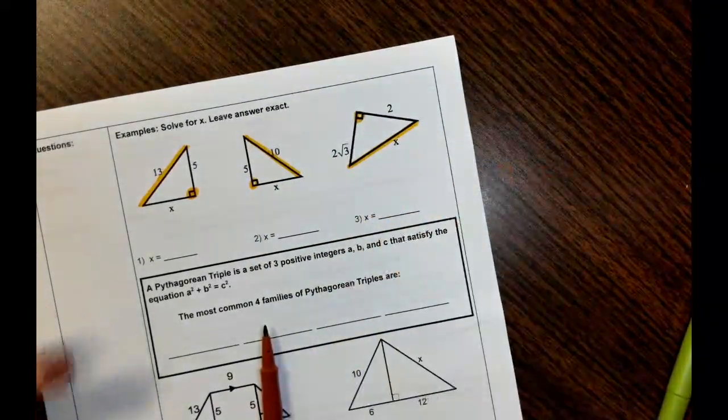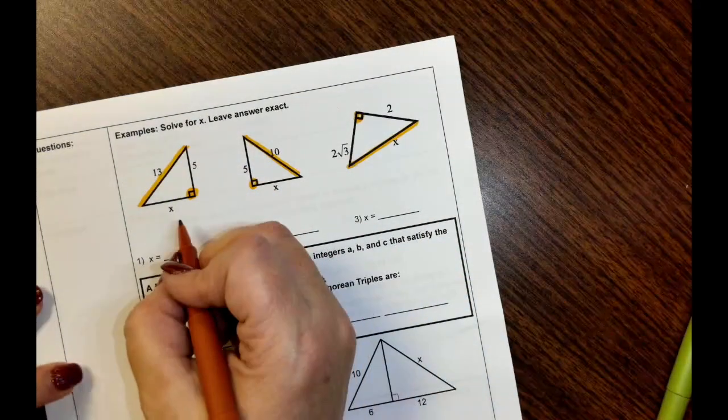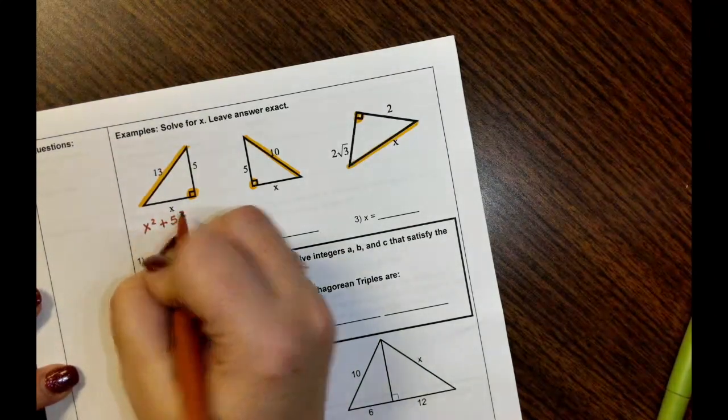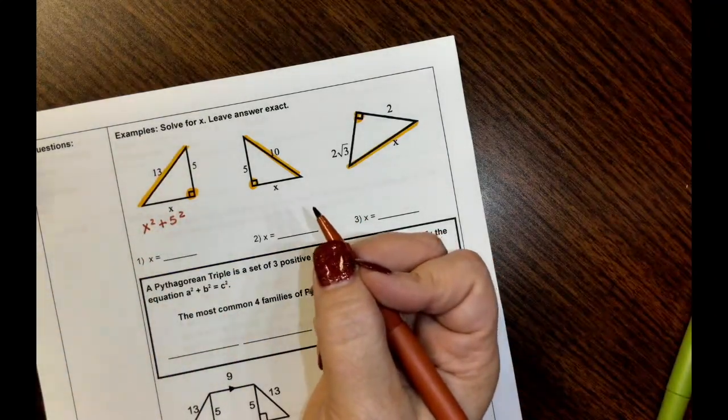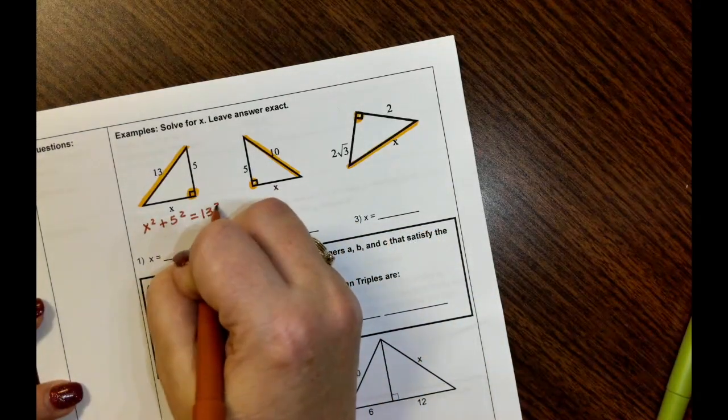Be careful, especially when they're looking like this. We always want to put them on the right hand side or the left hand side. So the two legs, A squared plus B squared, it doesn't matter which one is A and which one is B. I like my variable to be first if possible. So that's the reason I wrote it that way.